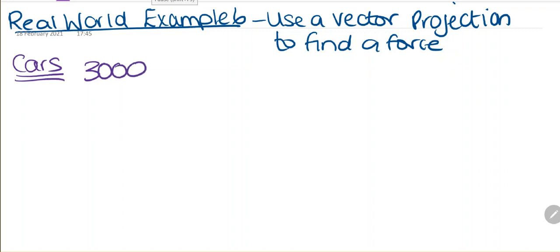We have a real world example 6. Use a vector projection to find a force. We're told that we have a car that weighs 3,000 pounds sitting on a hill.